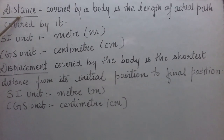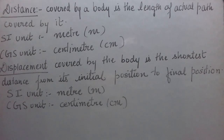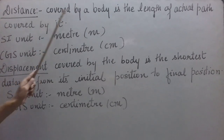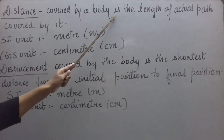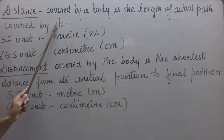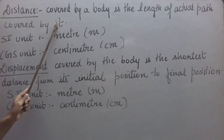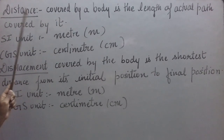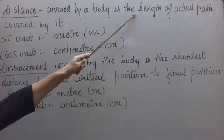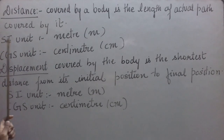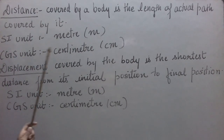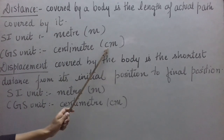Let us first see the definition of distance. Whenever a body is in motion, it is going to move along a certain path. Distance covered by a body is the length of the actual path covered by it. The path which the body has covered has a certain length which we can measure using a measuring tape. So that length of the path is called the distance travelled. Since it is a length, its SI unit is meter (m) and its CGS unit is centimeter (cm).